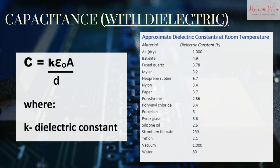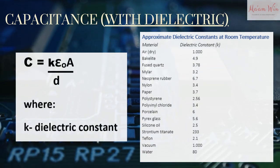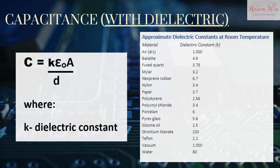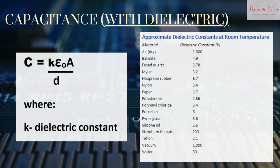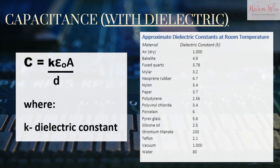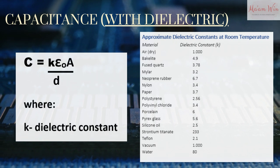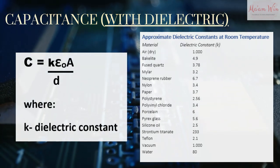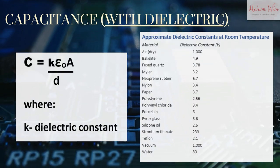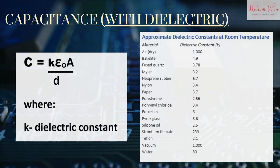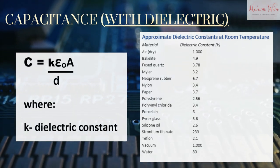We can express the capacitance when the capacitor is filled with a dielectric as shown in the formula. Therefore, we can make the capacitance very large by decreasing d, the distance between the plates. Increasing the area also increases the capacitance. The increase in capacitance is due to the increase in the magnitude of the electric field in the presence of the dielectric.